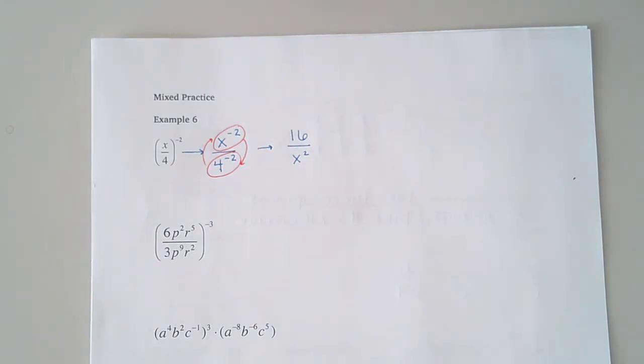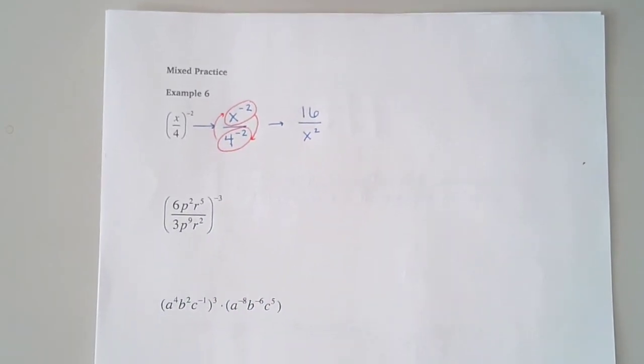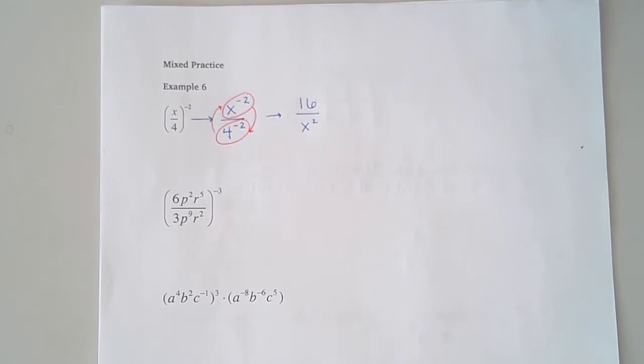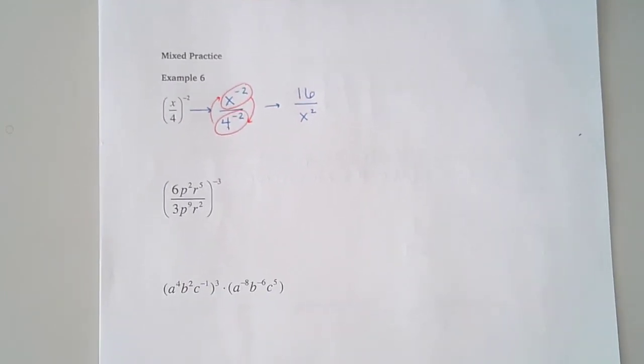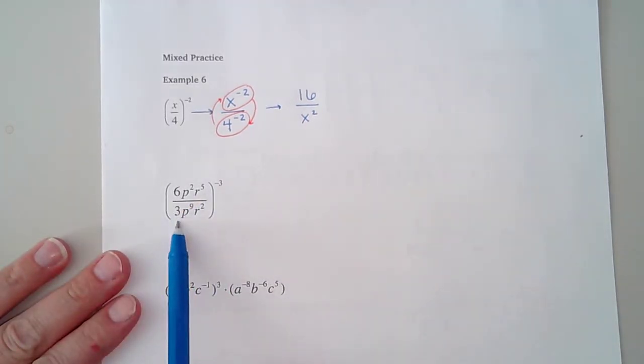Looking at this next one, I see that I have a negative exponent here. I would actually encourage you not to worry about the negatives until we get to the very end of the problem. Sometimes you're going to have things that switch to negative and then switch back to being positive. It's easier to worry about placing everything at the end. So before I worry about this negative 3, I'm going to do some reducing inside here. I'm going to use my division rules.